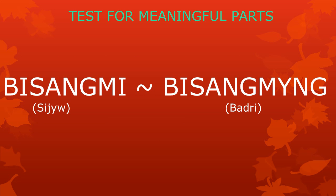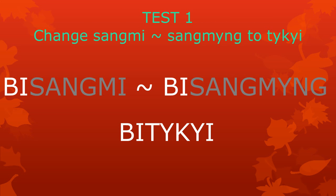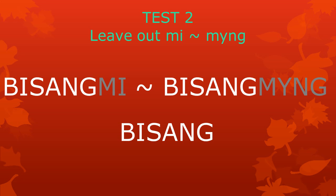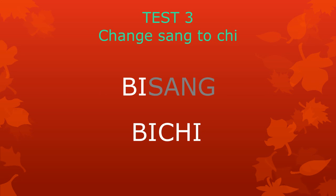Take the word bisangmi — or bisangmeng in the Badri dialect — for example. We can change the part sangmi or sangmeng to tekei, and the result is bitekei, which is a correct word. We can leave out mi or meng and get bisang, also a correct word. We can change sangmeng to tekei and get bitekei, also a correct word.